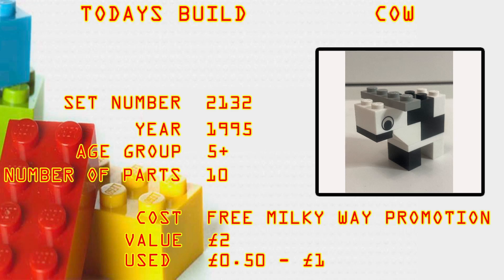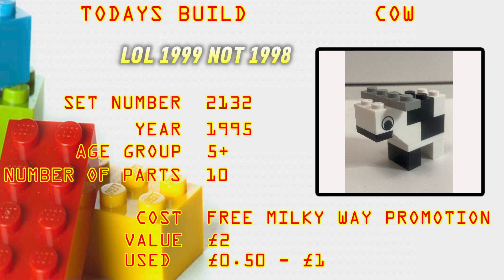What's up brick builders, today's build is the cow set number 2132. Year it came out was 1995, age group 5 plus, number of parts 10. Cost: it was a free Milky Way promotion back in 1995, but it was then also released as a denim promotion a couple of years later, and in 1998 it was released as part of the advent calendar.